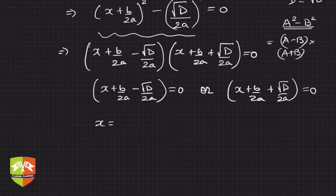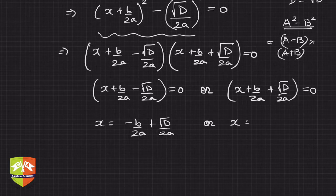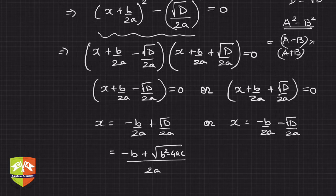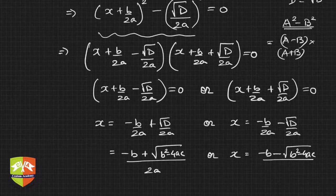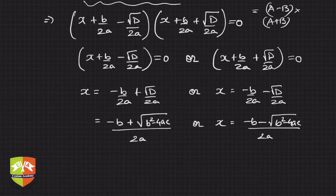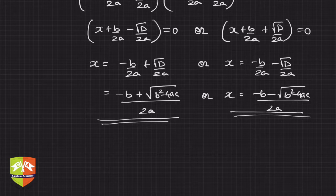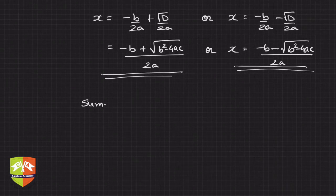From the factored form, we get x = -b/2a - √D/2a or x = -b/2a + √D/2a. Since D = b² - 4ac, this gives x = (-b ± √(b² - 4ac)) / 2a. This is also known as the quadratic formula — a method for finding the roots of a quadratic equation.